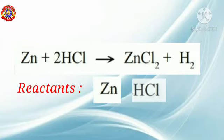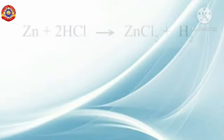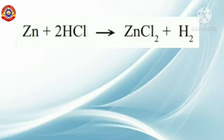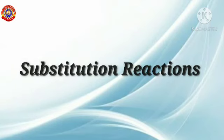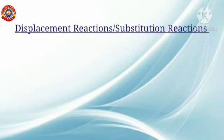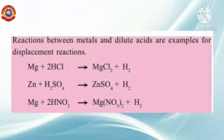What are the reactants and products in this reaction? Zinc and hydrochloric acid are the reactants, whereas zinc chloride and hydrogen are the products. During this reaction, the zinc atom replaces the hydrogen from hydrochloric acid and forms zinc chloride. These types of reactions are called displacement reactions or substitution reactions — reactions where an element in a compound is displaced by another element. The reactions between metals and dilute acids are examples of displacement reactions.